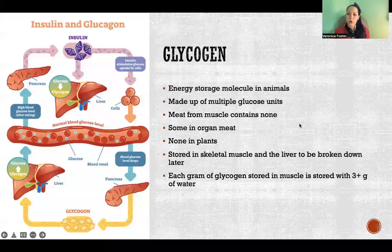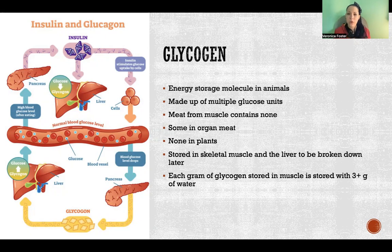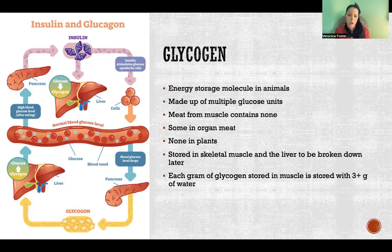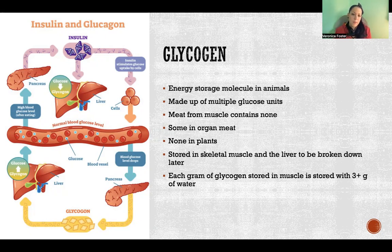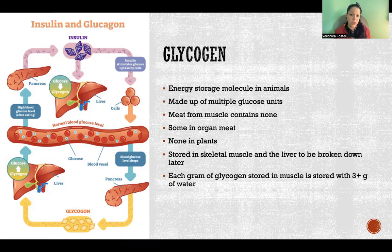Glycogen is the energy storage molecule in animals. Animals produce glycogen as a way to store glucose — humans do it, other animals do it. In terms of eating glycogen, it's a negligible part of our diet. When we eat muscle meat from animals, it doesn't contain glycogen because it breaks down before we actually consume the meat. There is some in organ meat depending on the organ, and none is contained in plants. So unless you're eating a lot of organ meats, you're probably not getting any significant glycogen in your diet.